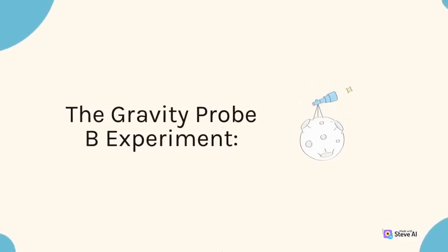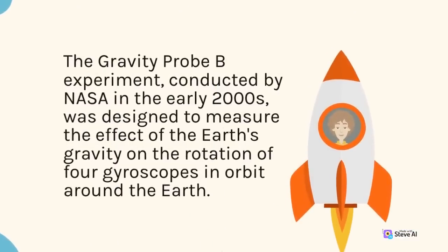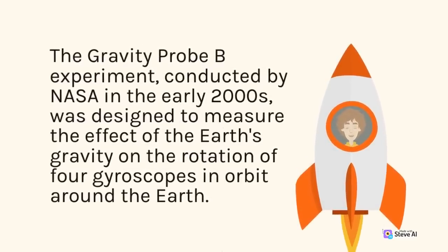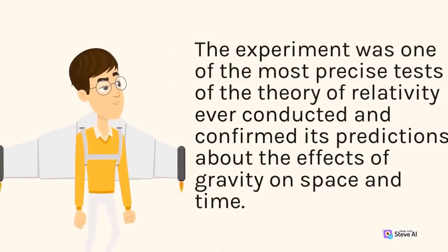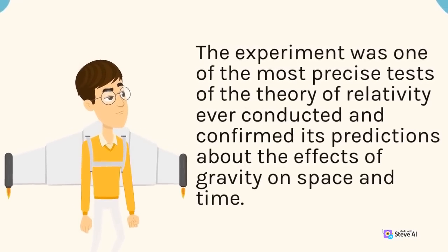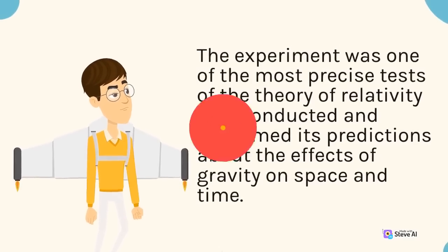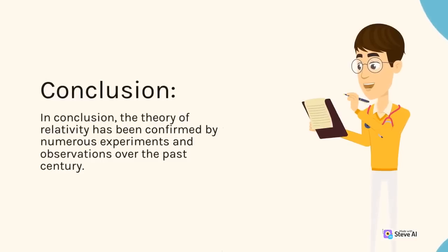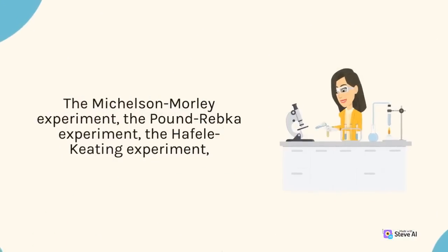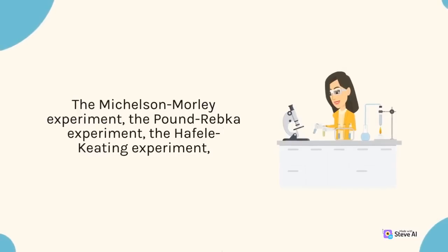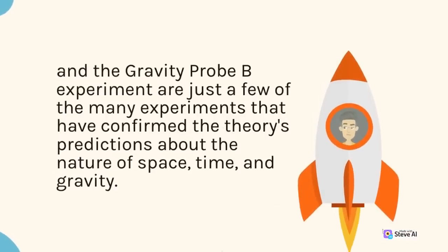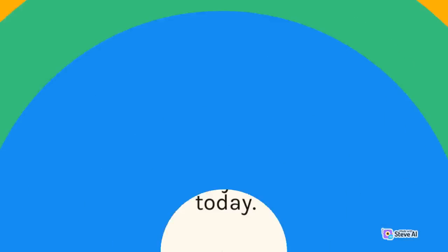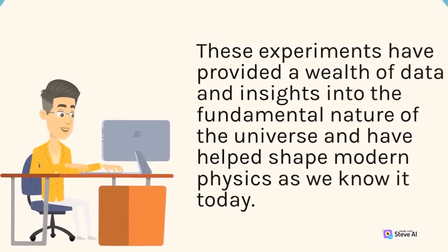The Gravity Probe-B experiment, conducted by NASA in the early 2000s, was designed to measure the effect of Earth's gravity on the rotation of four gyroscopes in orbit around the Earth. The experiment was one of the most precise tests of the theory of relativity ever conducted and confirmed its predictions about the effects of gravity on space and time. In conclusion, the theory of relativity has been confirmed by numerous experiments and observations over the past century. The Michelson-Morley experiment, the Pound-Rebka experiment, the Hafele-Keating experiment, and the Gravity Probe-B experiment are just a few of the many experiments that have confirmed the theory's predictions about the nature of space, time, and gravity. These experiments have provided a wealth of data and insights into the fundamental nature of the universe.